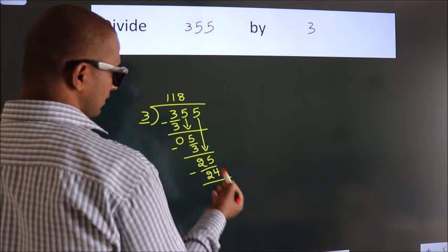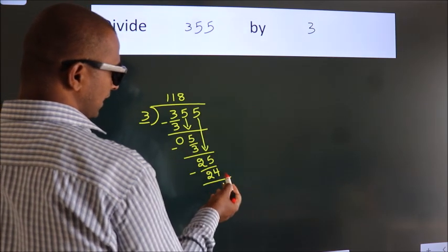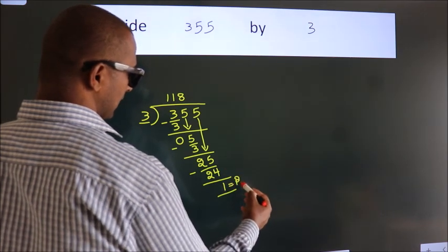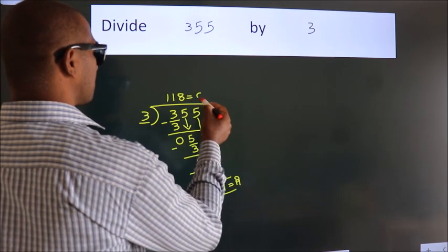After this, no more numbers to bring it down. So we stop here. This is our remainder. This is our quotient.